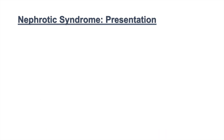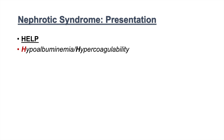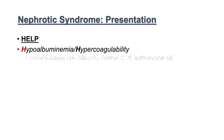So how does nephrotic syndrome present itself clinically? I like to use the mnemonic HELP to help remember the clinical presentation of nephrotic syndrome — H-E-L-P. H stands for hypoalbuminemia and hypercoagulability. A patient with nephrotic syndrome excretes excessive amounts of protein in their urine, and these proteins can include albumin, protein C, protein S, and antithrombin 3. Because they're excreting so much albumin in their urine, they can become hypoalbuminemic. And because they're excreting protein C, protein S, and antithrombin 3, they can actually have an increased risk of hypercoagulability.